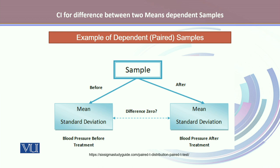In this example, we will talk about a blood pressure patient where we'll make two observations — one before the treatment and one after the treatment. We'll calculate the mean and standard deviation before the treatment, and then calculate the mean and standard deviation of blood pressure after the treatment. When these two before and after observations are obtained from the same respondent, from the same person, the samples will be called dependent or paired samples.